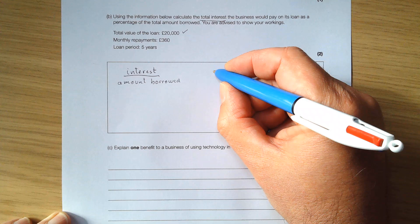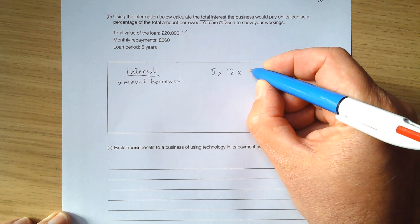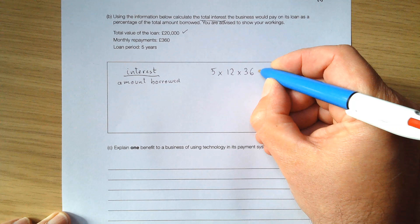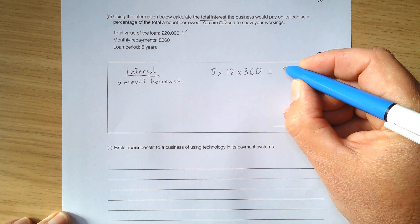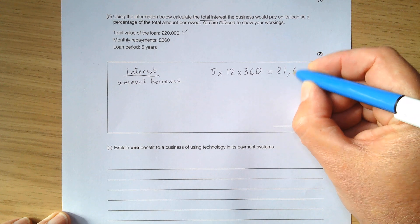So just write it down here: 5 years, 12 months, and each month you pay £360. Now you do the calculation and you will find that this is £21,600.